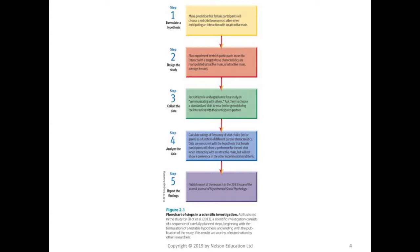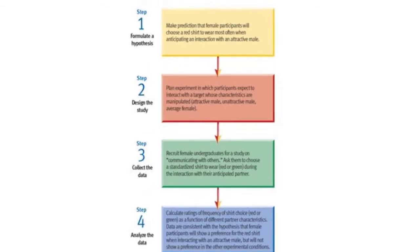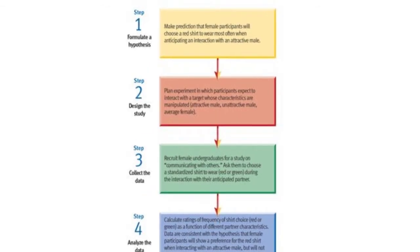Step number one is to formulate a hypothesis. In this particular case, the authors made a prediction that female participants will choose a red shirt to wear most often when anticipating an interaction with an attractive male.